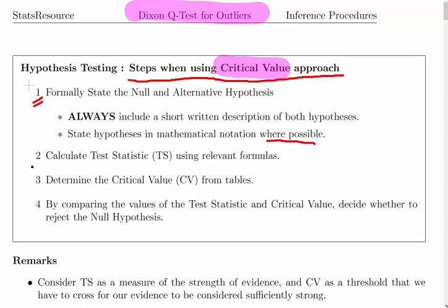The second step is as follows. Calculate the test statistic using the relevant formulae and determine the critical value CV from tables. Then by comparing the values of the test statistic and the critical value, decide whether to reject the null hypothesis.